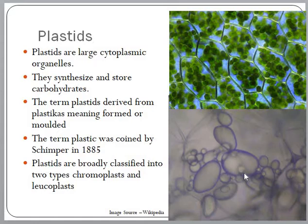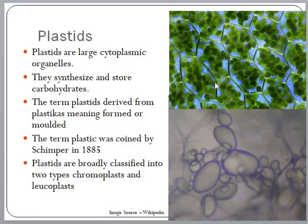Plastids are broadly classified into two types: chromoplast and leucoplast, depending on whether they are having color or not. When a plastid is having color, it is called chromoplast. And if it does not have a color, it is called leucoplast.